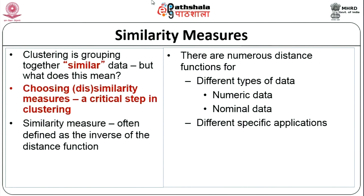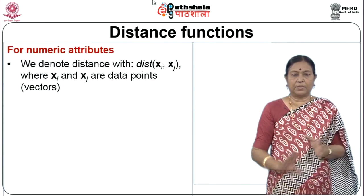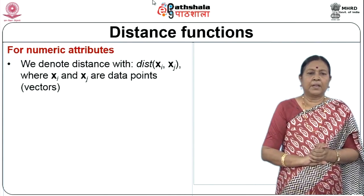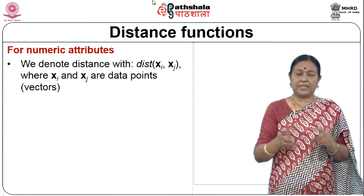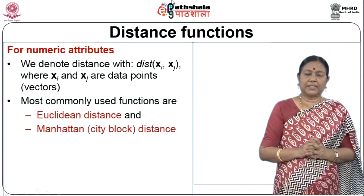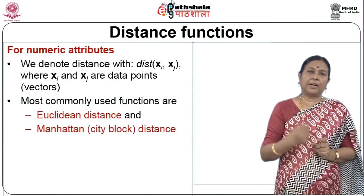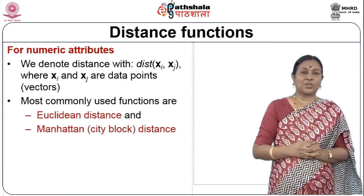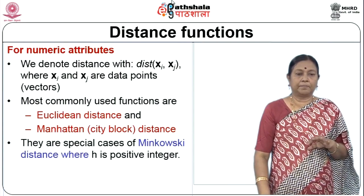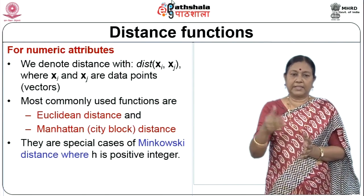For numerical attributes, the most commonly used functions are Euclidean distance and Manhattan or city-block distance. They are all special cases of Minkowski distance, where h is a positive integer. The Minkowski distance between xi and xj is the h-th root of the sum of |xi_k − xj_k|^h over all dimensions. When h equals 2, we get Euclidean distance — the geometric distance between two points. When h equals 1, we get Manhattan distance, which sums the absolute differences dimension by dimension.